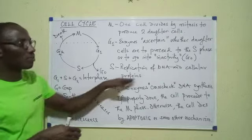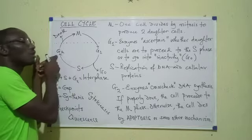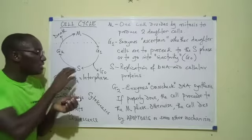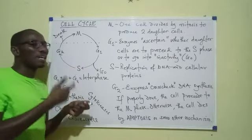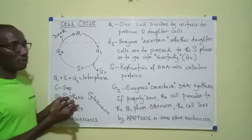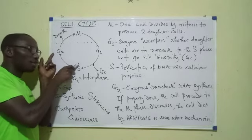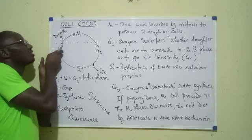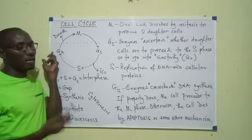Once DNA replication is complete, the cell moves on to G2 — that's another checkpoint. The proteins there check whether the DNA synthesis that occurred in S was properly done, whether replication was properly carried out. If not properly done, DNA repair can occur at G2. But if it is not the type that can be repaired, the cell would die — usually by what we call programmed cell death, or apoptosis.